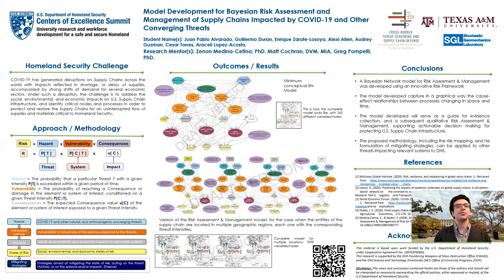COVID-19 has generated disruptions in supply chains reflected in shortages and delays of supplies, but also in strong shifts in demand for several economic sectors. Under this disruption, the challenge is to address the social, environmental, and economic impacts on US supply chain infrastructure and identify critical nodes and processes to both protect and restore the supply chains for an uninterrupted flow of materials and supplies that are critical to Homeland Security.